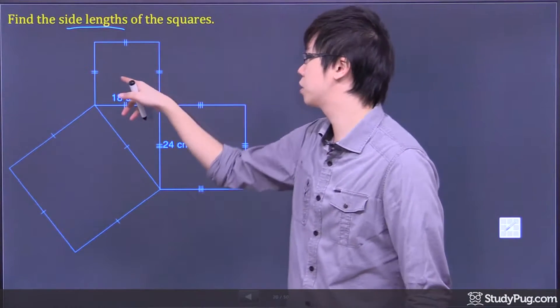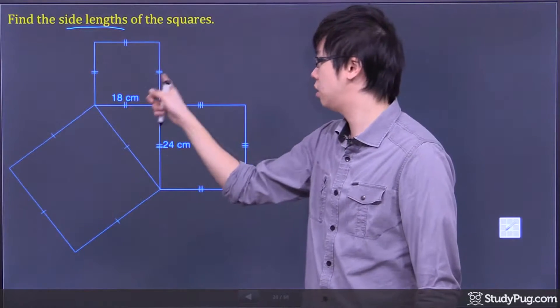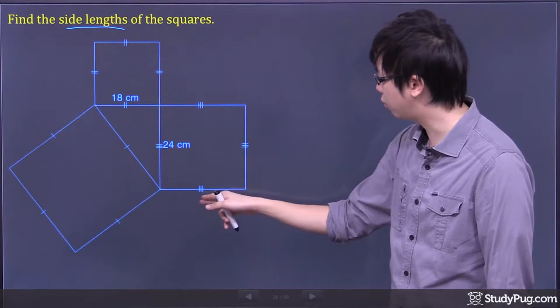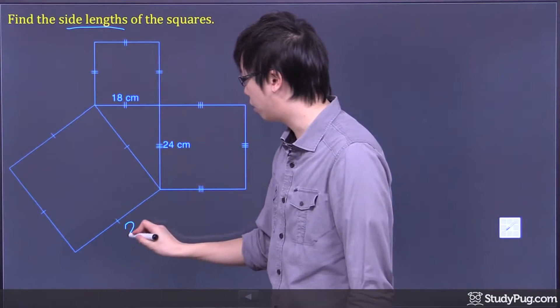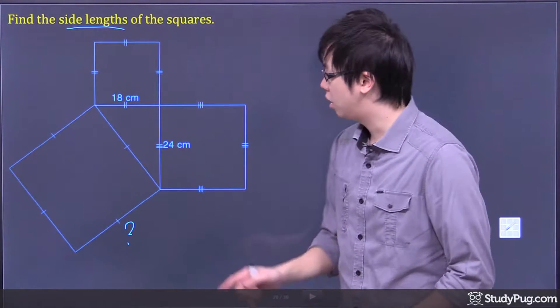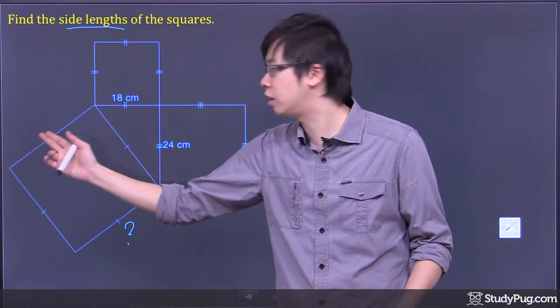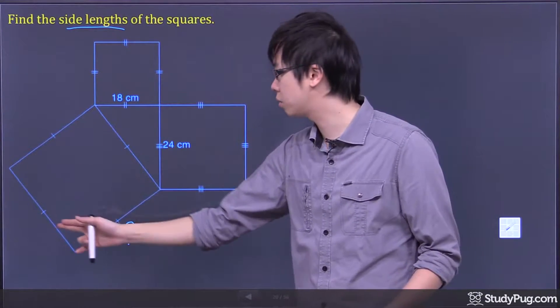Now this square here, we already know all the sides. It's 18, 18, 18, 18. Whereas this one here is 24, 24, 24, 24. Now we're probably trying to figure out this one over here. If you can figure out this one, then that means you figure out all the side lengths of this big square.